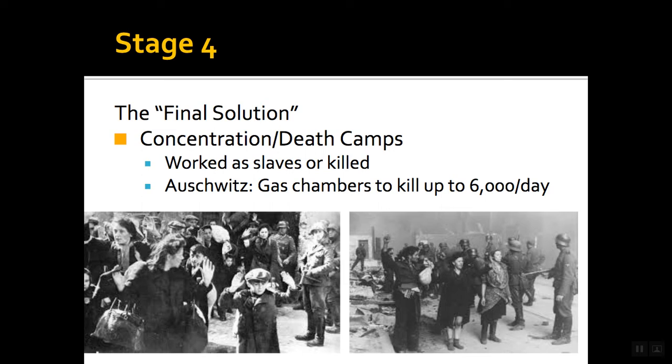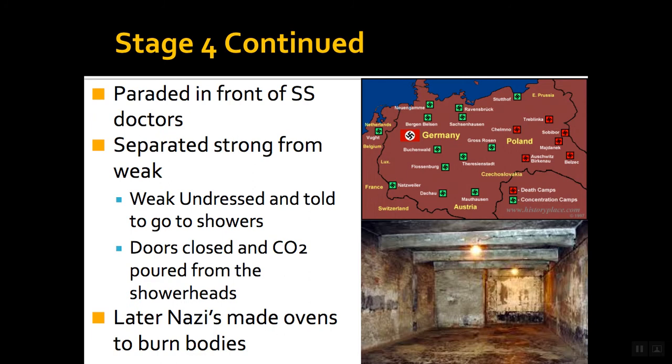Auschwitz is probably one of the most famous death camps. At Auschwitz, they built gas chambers that could kill up to 6,000 people a day — which is just horrendous to even think about. What happened when you arrived at Auschwitz was that you were paraded in front of SS doctors — the SS being the secret police, the Schutzstaffel — and they would determine if you were strong or weak.